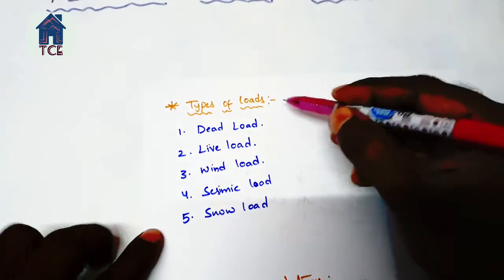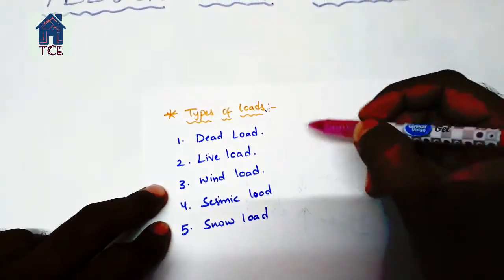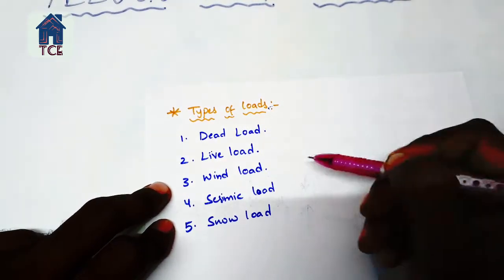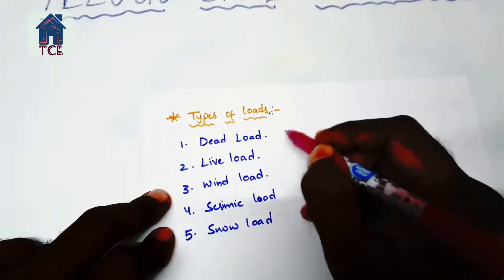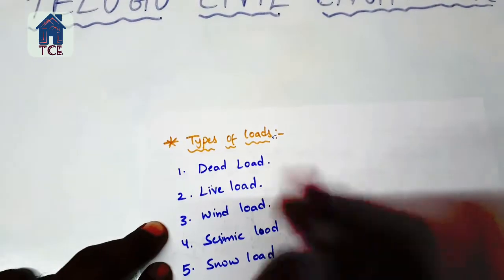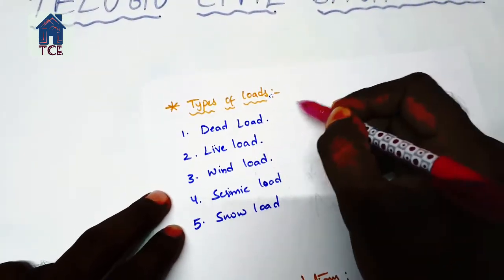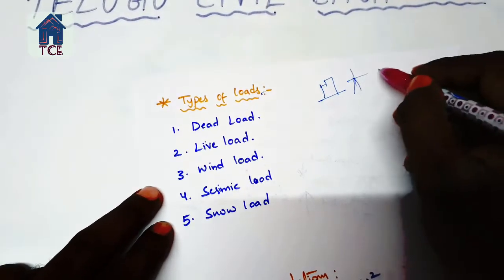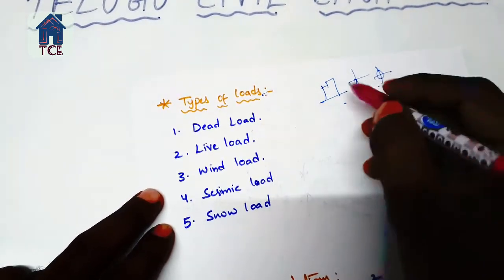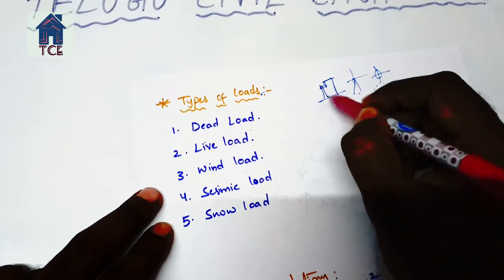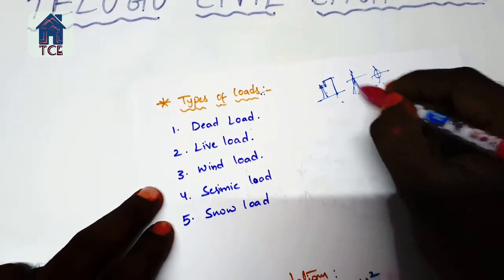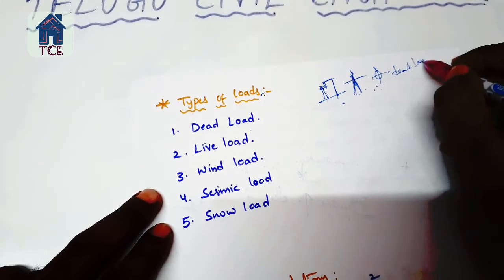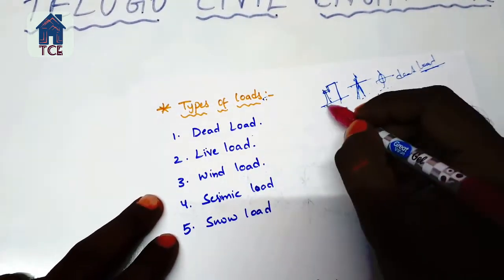Let's discuss types of loads during construction. First is dead load - the weight of the building itself, including walls, slabs, beams, and columns. This is the self-weight of the structure, which is called dead load.